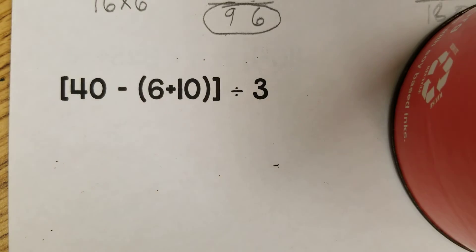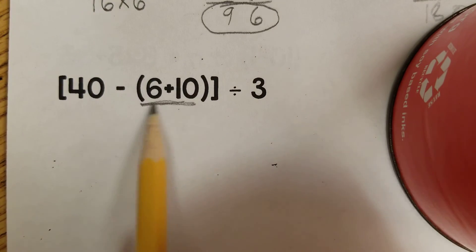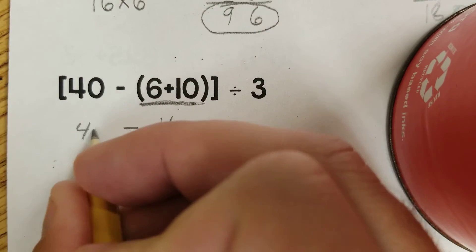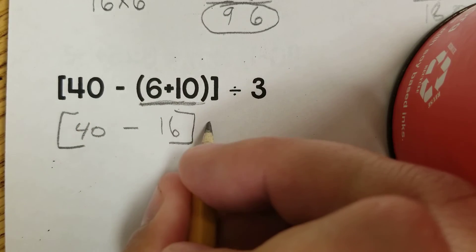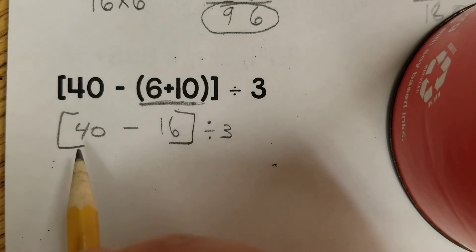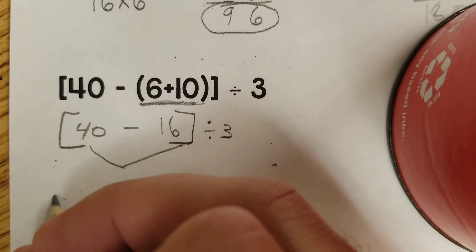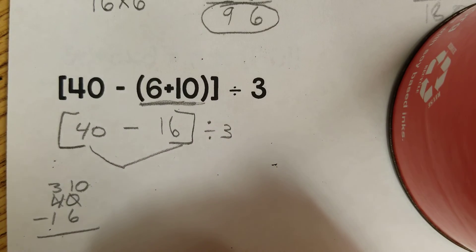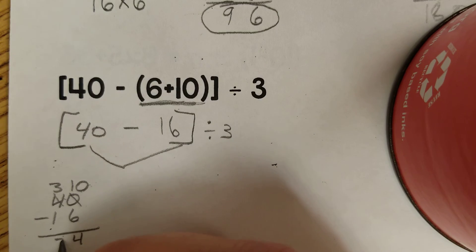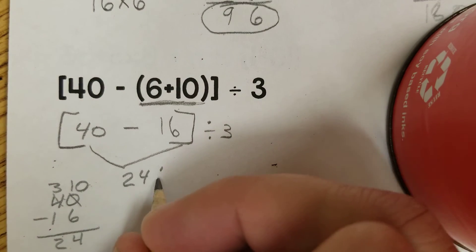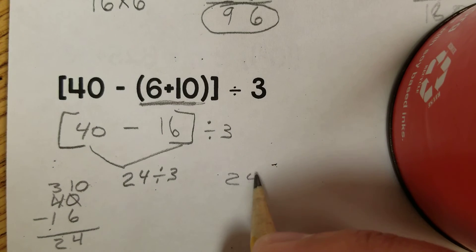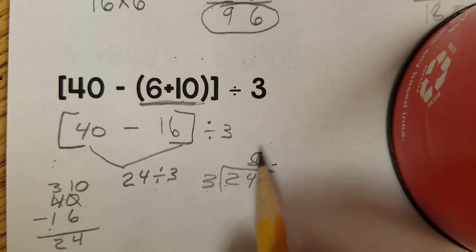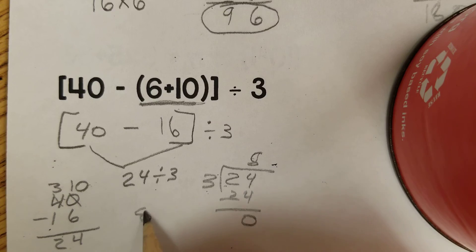PEMDAS says to do our parentheses and brackets first. We have a parentheses with 6 plus 10 equals 16, and that's inside a bracket with 40 minus 16, divided by 3. We do the bracket next: 40 minus 16 — regroup — 10 minus 6 is 4, 3 minus 1 is 2, so that's 24. Then 24 divided by 3: how many times can 3 go into 24? The answer is 8.